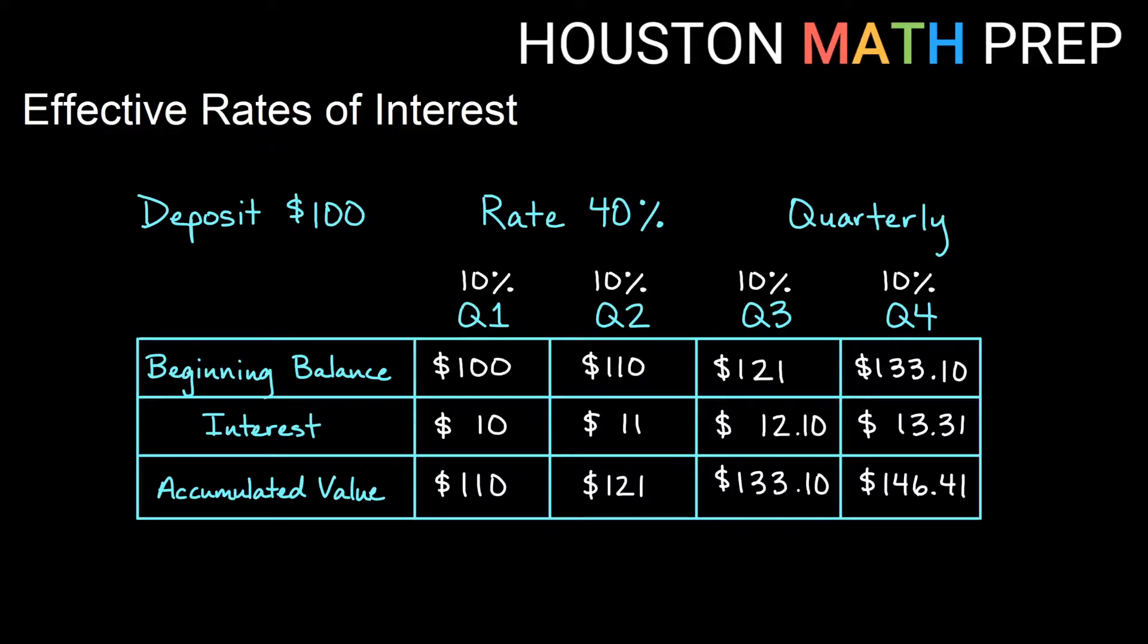So if you think of this in terms of simple interest, we got what's called an effective rate of 46.41%. You can tell that because we got $46.41 and it was $100, so it's easy to see based on $100 there.